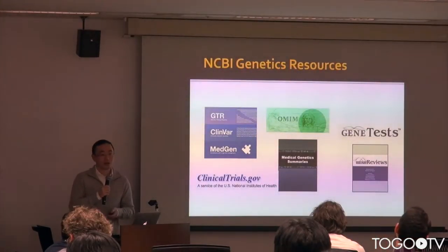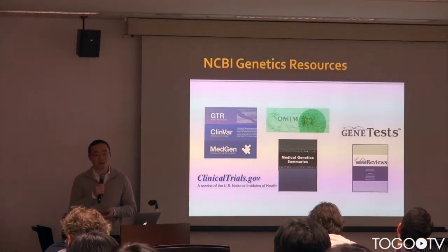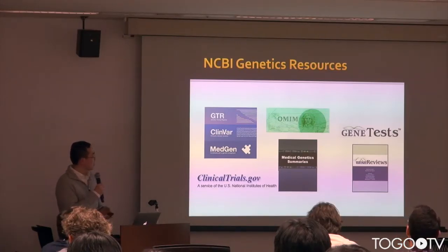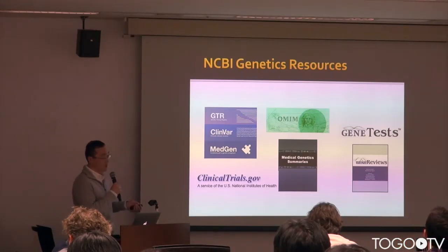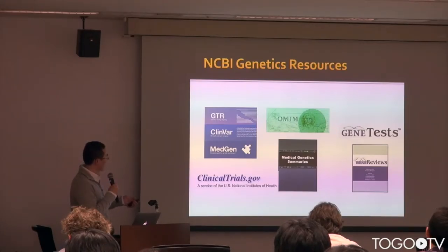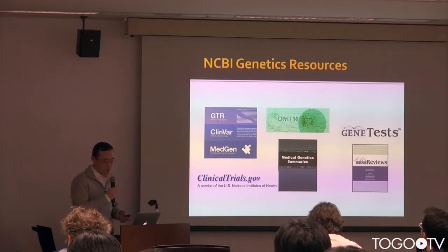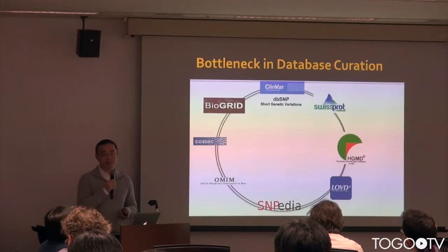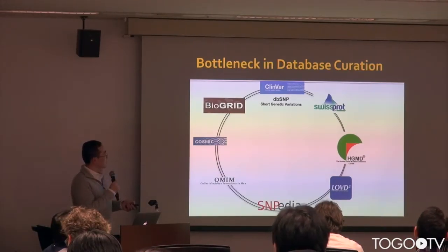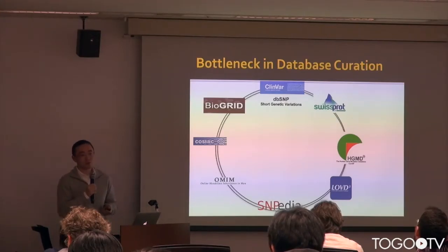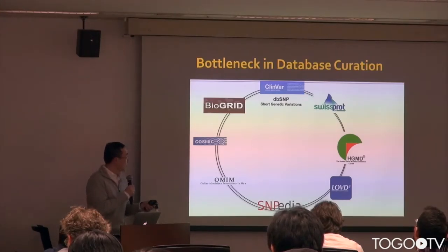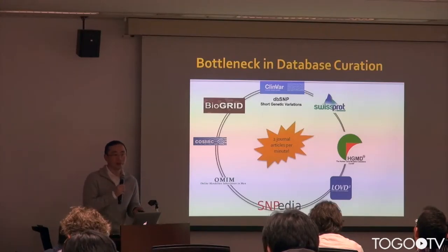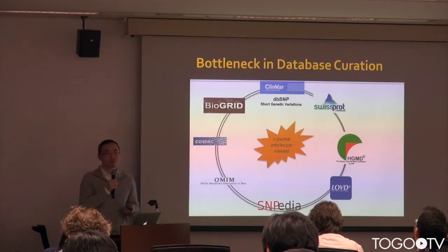NCBI has a history of maintaining databases for genetic information. We have a number of different resources related to genetic data, and many of them contain text information. Even looking at the broader community, there are also many other databases about genetic variants. But all of these have a main bottleneck requiring human curation — as we've already discussed during this meeting, PubMed increases by a million papers each year.